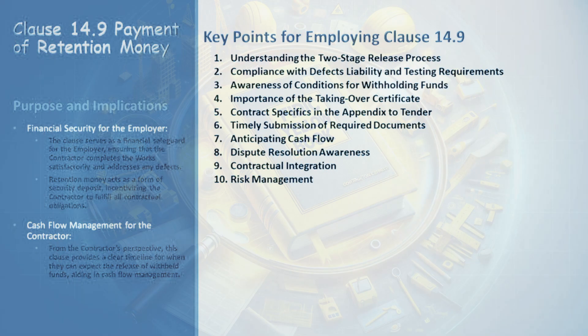Key points for employing Clause 14.9, Payment of Retention Money, in FIDIC Yellow Book 1999. Understanding the two-stage release process: retention money is released in two phases — the first half upon the issuance of the taking-over certificate, and the remainder after the defects notification periods expire. This structured release necessitates careful planning and understanding of the project's timeline.